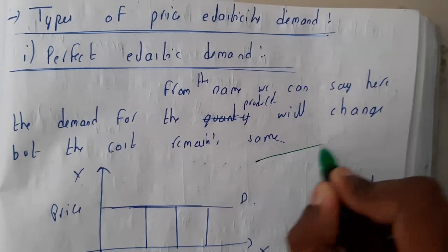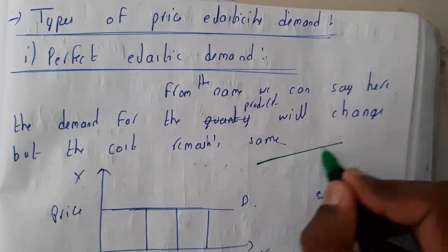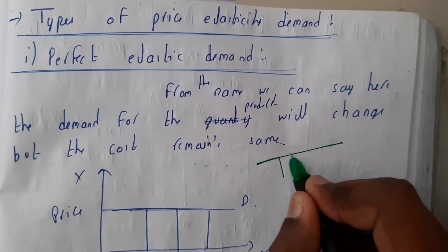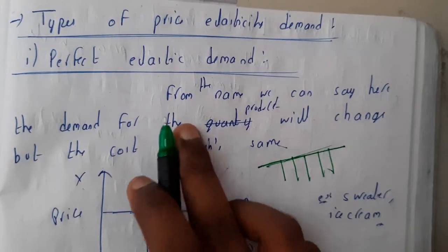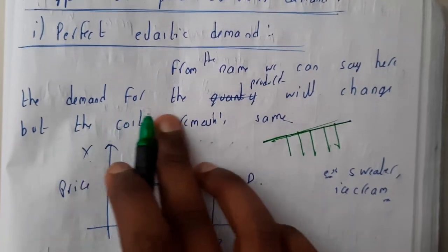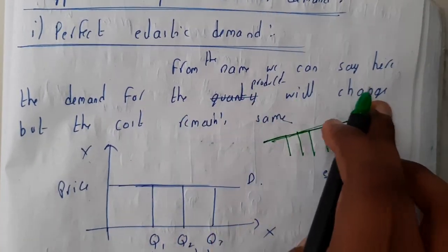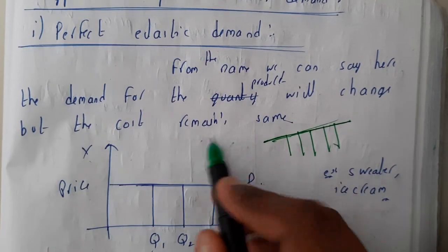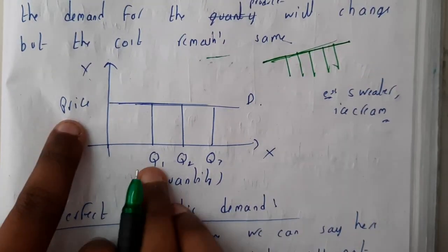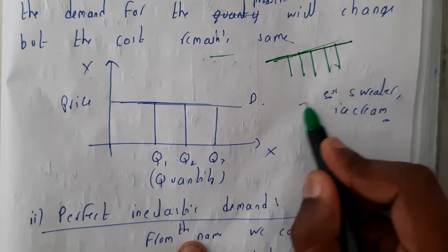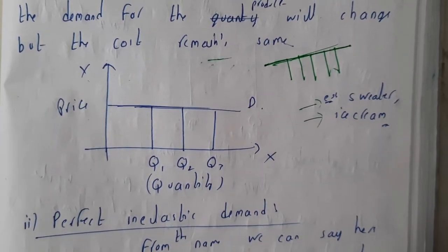The first type is perfect elasticity of demand. Here the price is constant and the demand or quantity will be changing, but the price remains constant. From the name we can say that demand of the product will change while price remains constant. You can draw a graph in this way — price is constant and demand is changing. The best example for this is sweaters and ice creams.